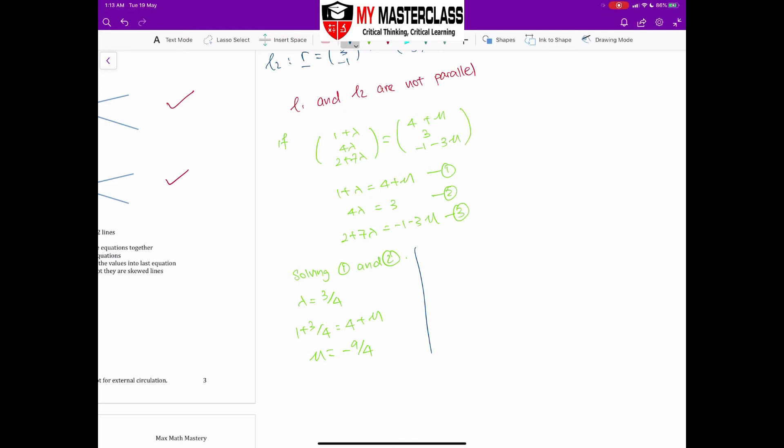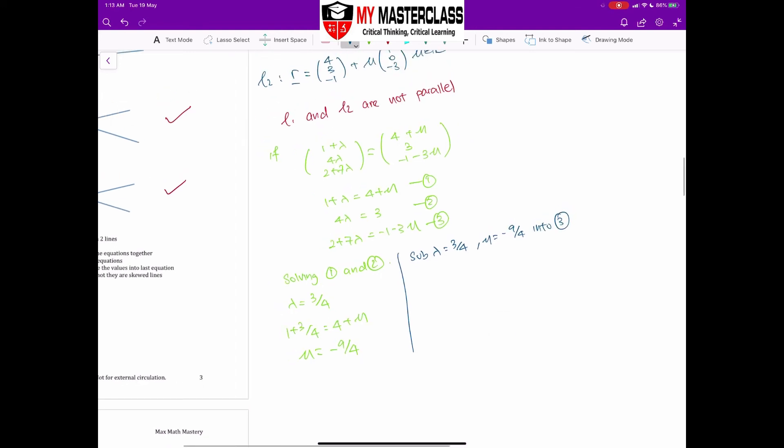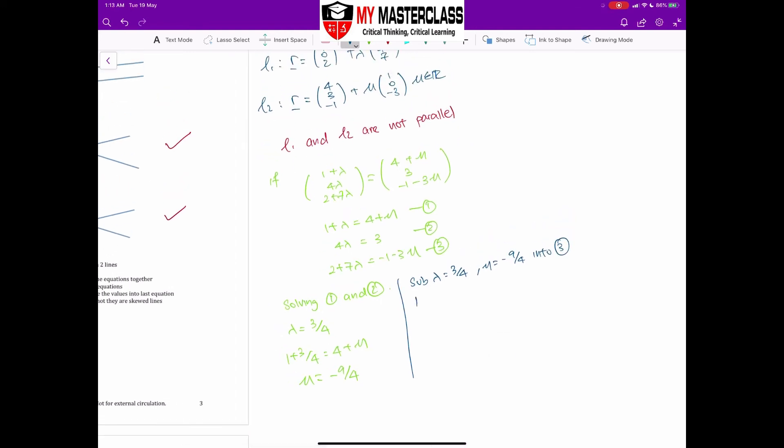Same thing, I'm going to sub lambda equal to 3/4 and mu equal to -9/4 into my equation 3. I'm going to compare my left-hand side and my right-hand side. So left-hand side is equal to 2 plus 7 lambda. I'm going to sub in my lambda value. This will give me 29/4.